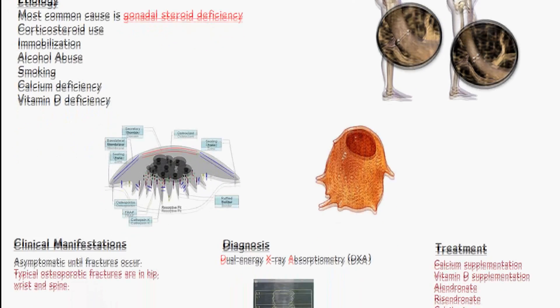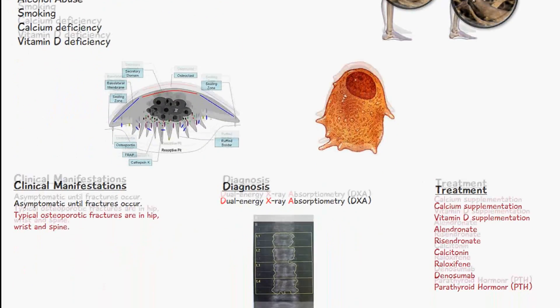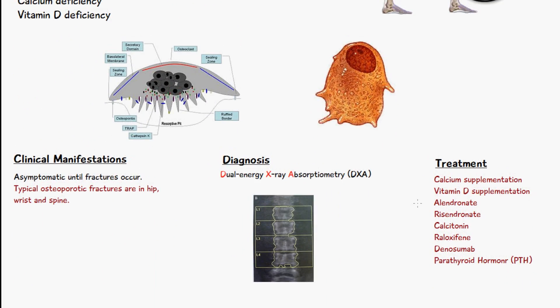The clinical manifestations of osteoporosis are usually asymptomatic until fractures occur. It's usually noticed on an x-ray taken for something completely separate, or when a fracture occurs and an x-ray is taken. Osteoporosis is then noted, and the typical osteoporotic fractures include the hips, wrist, and the spine.